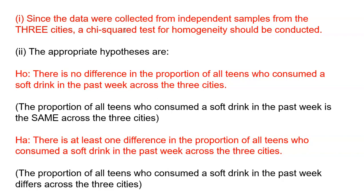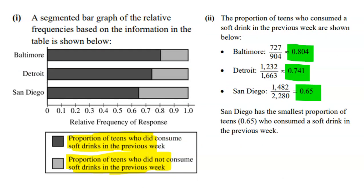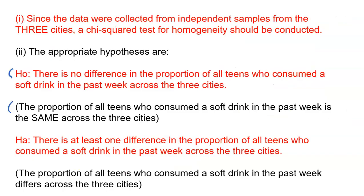The second part is to give the appropriate hypotheses. The null is status quo — no difference in the proportion. There are two ways to say this: one option is there is no difference in the proportion of all teens who consumed a soft drink in the past week across the three cities. Another wording: the proportion of all teens who consumed a soft drink in the past week is the same across the three cities. Our sample shows a clear difference between the cities, but that doesn't mean there is a true difference in the actual population proportions. The null says everything is the same.